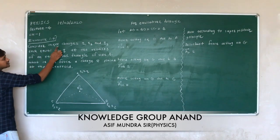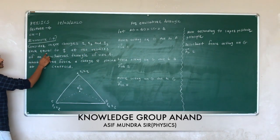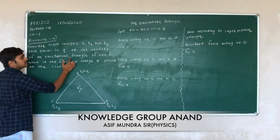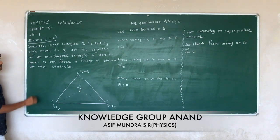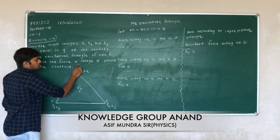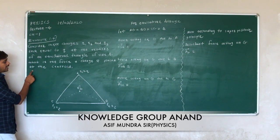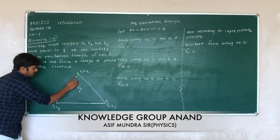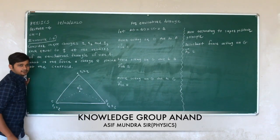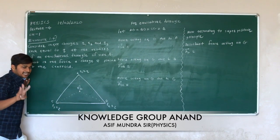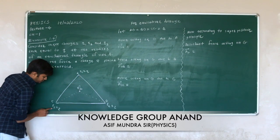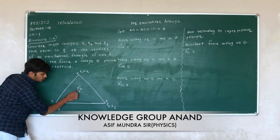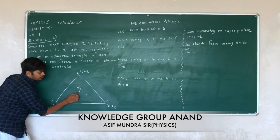Consider 3 charges q1, q2, and q3, each equal to q, at the vertices of an equilateral triangle. What is the force on a charge q placed at the center? It is equilateral triangle A, B, C. Three charges q1, q2, and q3 are each equal to q. You have to find what is the force acting on charge q placed at the center, G.